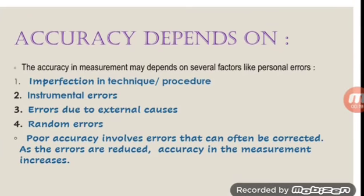Accuracy depends on what factors? The accuracy in measurement may depend upon several factors like personal errors. The reason for personal error is imperfection in the technique or the procedure used by the observer. Instrumental errors — that is, defects in the instrument. Errors due to external causes like the effect of supply voltage, temperature, pressure, mechanical strain, etc.